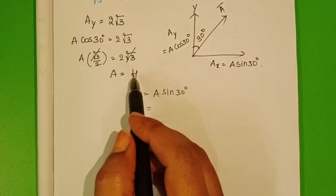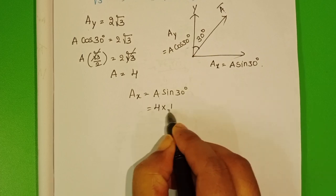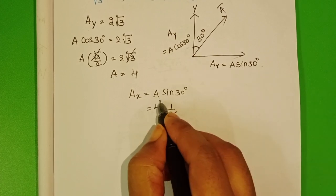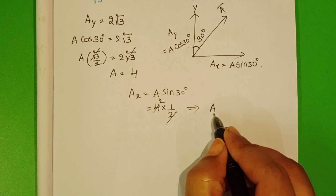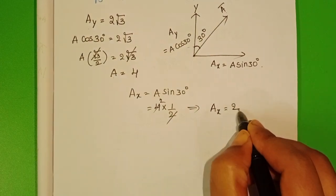Here we know A equals 4, substitute. A sin 30 degrees, value 1/2. 2 and 2 cancel. The magnitude of X component of the vector is 2.